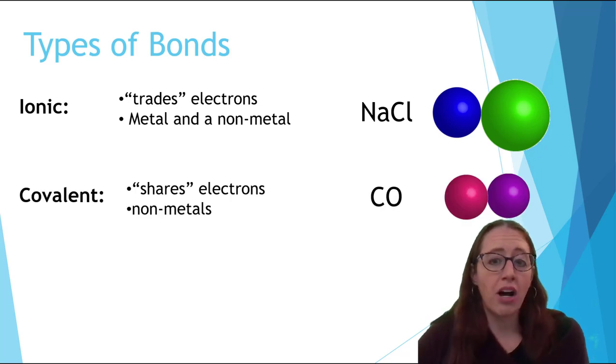In covalent compounds, all atoms may be close to an octet, so instead of trading electrons, they share electrons.